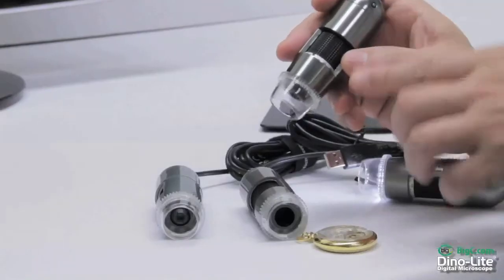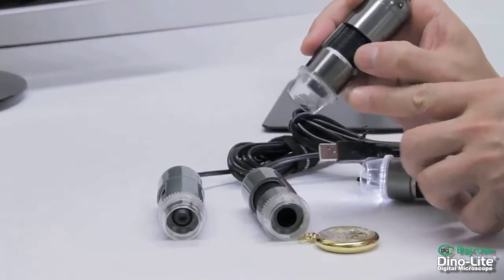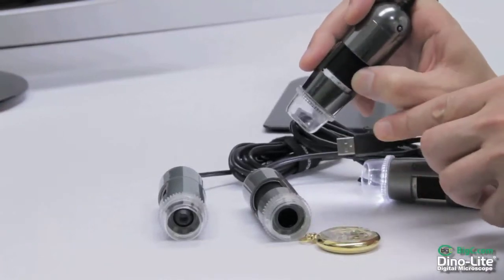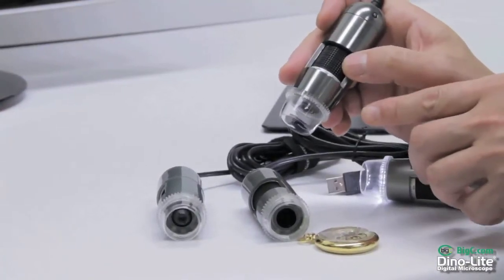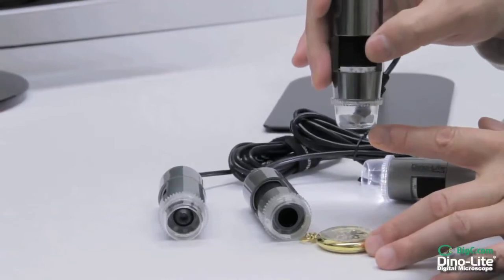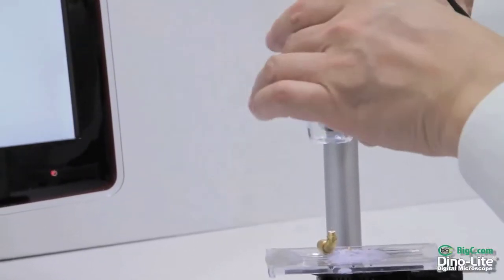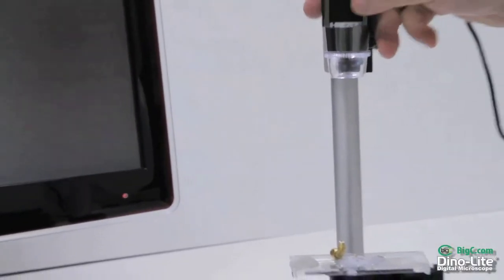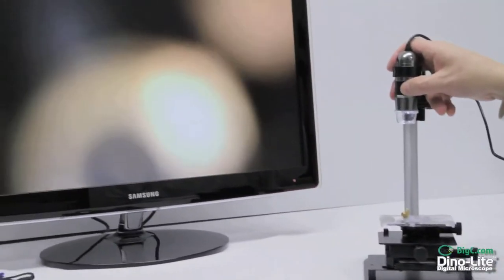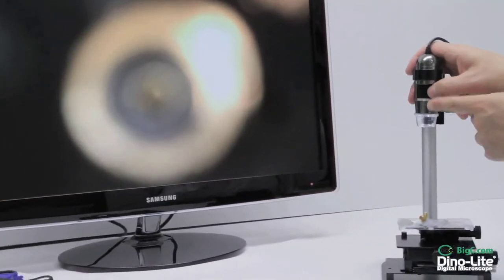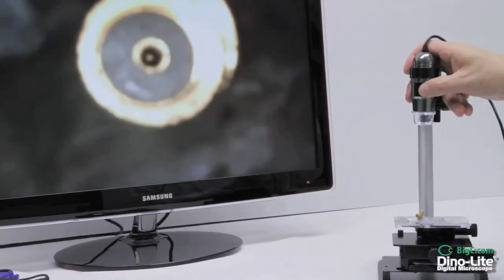Next we have our AM413ZTL and MZTL, as seen here with all metal option. This scope is capable of 10 to 92 times the magnification. This allows for a longer working distance but still keeping a high magnification.